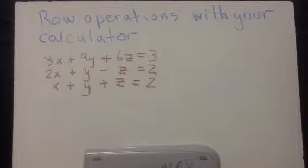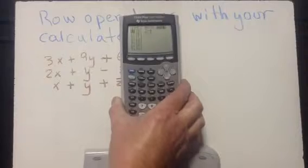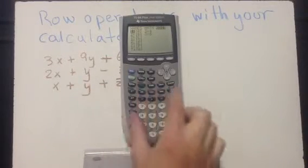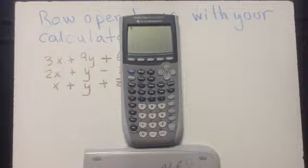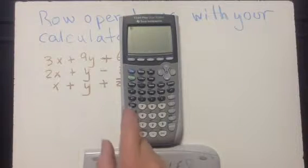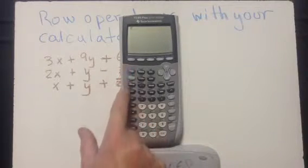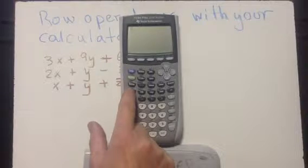First of all, I'm going to show you how to enter this as a matrix onto your calculator. So here's my calculator. I'm going to go back to my home screen. The way to get to the matrix menu is to press the second button, and then press the matrix button.